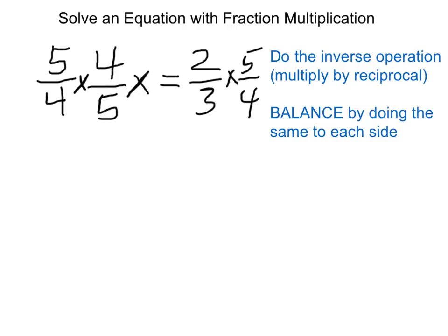On the left side of the equation everything cancels nicely. The 5 with the 5, the 4 with the 4, leaving me simply with x.